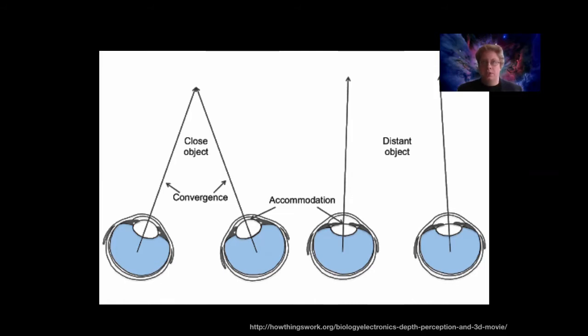If I instead look off in the distance and I see something then my eyes are going to have views that are more parallel. And our brains can interpret this as a distance. It tells us how far away these objects are.